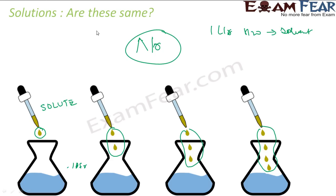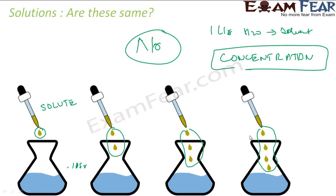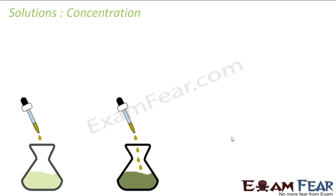The concentration is not the same. The key word here is concentration. The concentration of these solutions in all scenarios 1, 2, 3, 4 will be different, because in all these cases the solvent is 1 liter but the solute is changing — 1 drop, 2 drops, 3 drops, 4 drops. So there has to be something called concentration which we need to define.